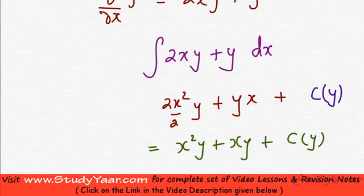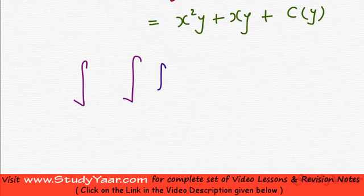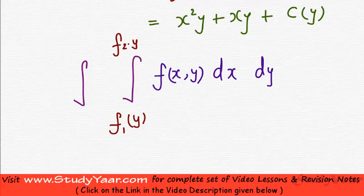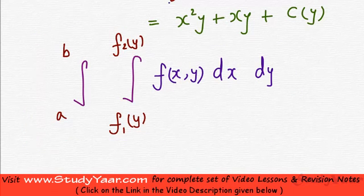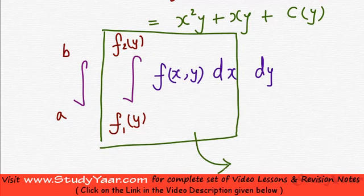Taking this concept forward, what we can do is we can write an integral of an integral. If you have the integral of f(x, y) dx dy, with inner limits from a function of y to another function of y, and outer limits from a to b, then an integral of this type is called an iterated integral. Here you calculate the inner integral assuming y as a constant.